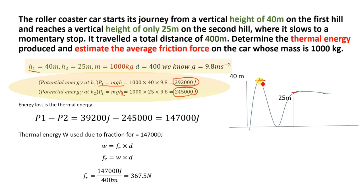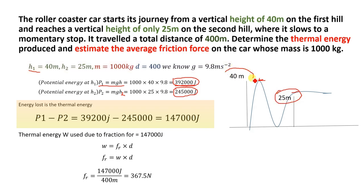During this motion, a lot of potential energy is lost, and that lost potential energy is converted into thermal energy. To calculate the thermal energy, we subtract the potential energy at h2 from the potential energy at h1: P1 minus P2, which gives us 147,000 joules. This is the energy lost during the motion, converted into thermal energy due to the frictional force.